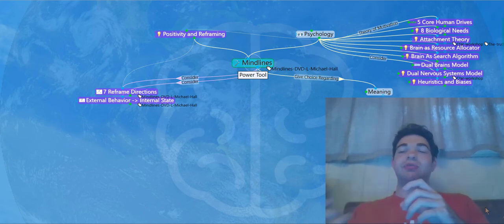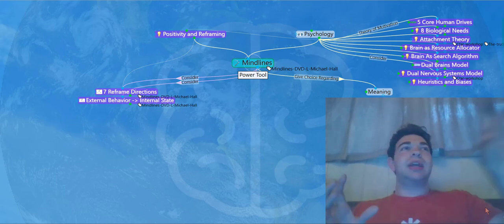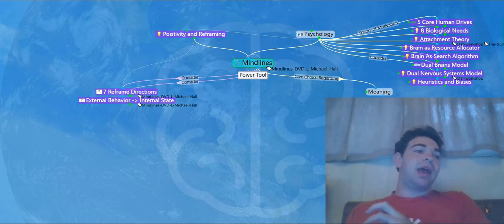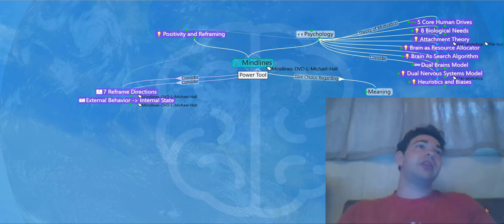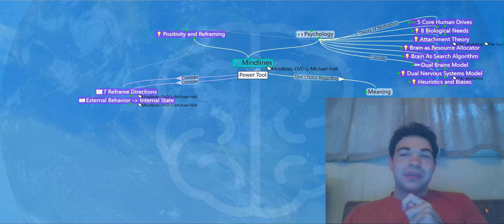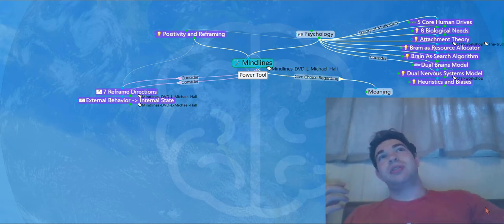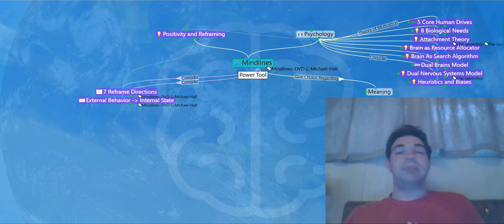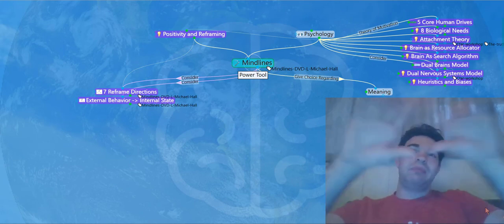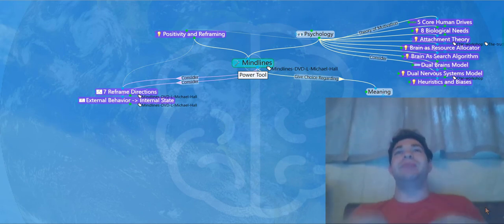MindLines is a systematic tool for reframing meaning. What reframing means is that you can take the facts of a situation and reinterpret them to have different meanings. You can imagine if you had a picture in a fancy frame in a museum, it might have a different meaning than if that same picture was stuck up with a thumbtack on a wall in a dumpy apartment. Same facts, same picture, different frame around the facts, therefore different meaning to you.